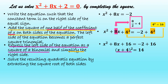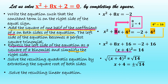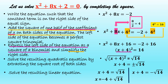Solve the resulting quadratic equation by extracting the square root of both sides. So we have the square root of quantity x plus 4 squared is equal to square root of 14, or x plus 4 equal to positive or negative square root of 14. Solve the resulting linear equation. We have two values: x plus 4 equal to the square root of 14, giving x equal to negative 4 plus square root of 14; and x plus 4 equal to negative square root of 14, giving x equal to negative 4 minus the square root of 14.